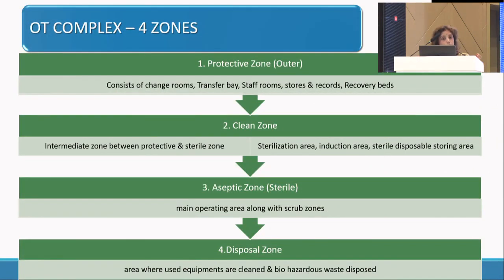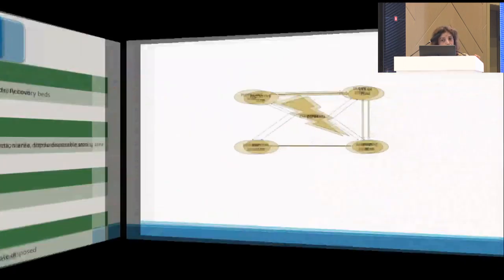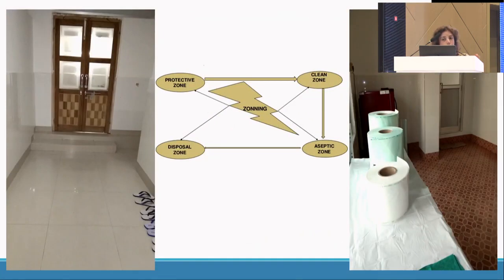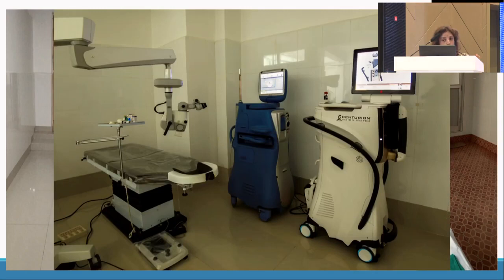Traditionally, the OT needs to be in four zones. Zone one is the protective zone, which has the changing room, staff rooms, and storage. The clean zone is the intermediate zone between the protective zone and the aseptic zone. The aseptic zone is the sterile zone where the OT proper is — where you operate. The disposal zone is where hazardous waste management and reprocessing of all equipment is done.